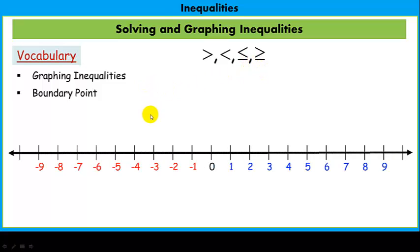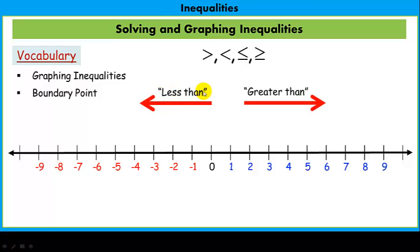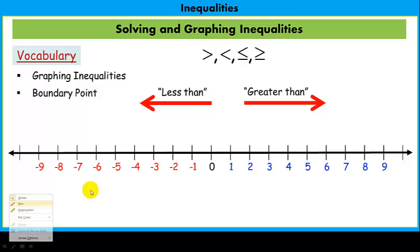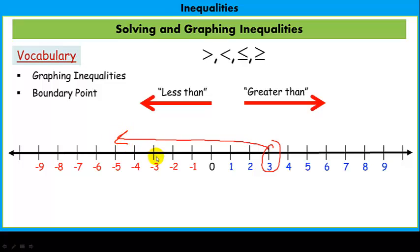Whenever we graph inequalities, we of course use a number line. Graphing inequalities also requires that we understand less than and greater than as it relates to a number line. For example, anything that is less than 3 is to the left on a number line, and obviously anything greater than 3 would be to the right on a number line.